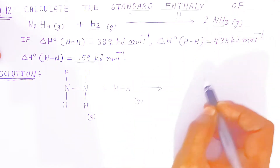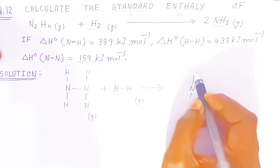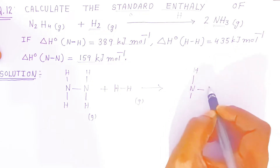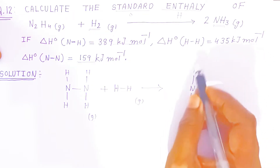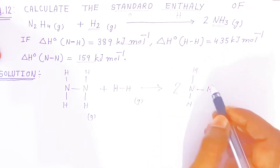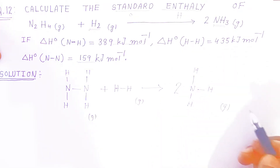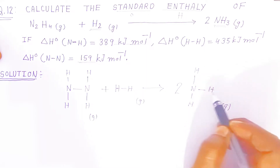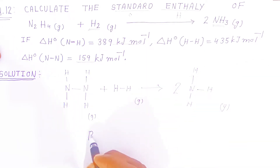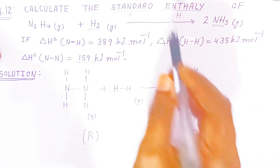On the product side, the product is ammonia. In ammonia, each nitrogen has three N–H bonds. Since two molecules of ammonia are formed, the total number of N–H bonds on the product side is six.